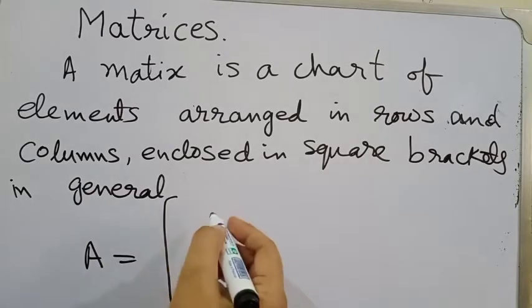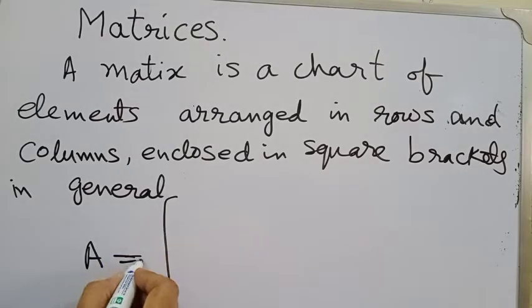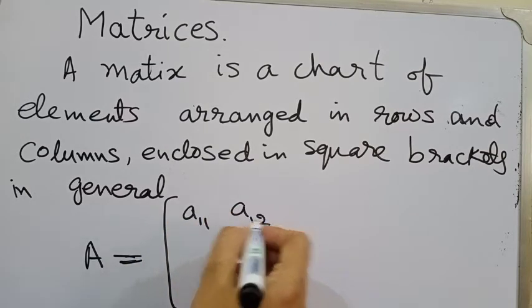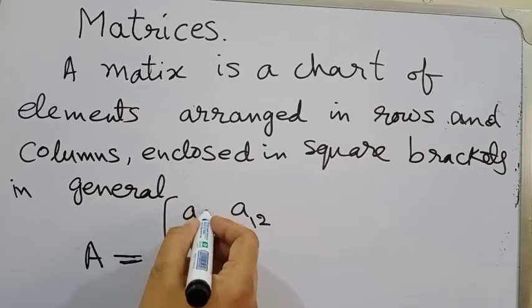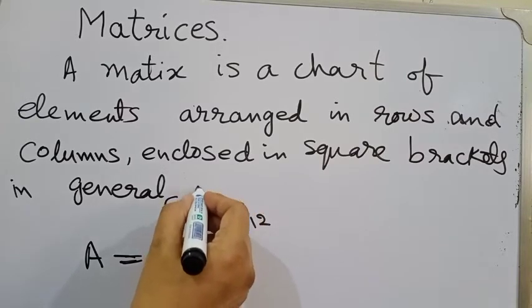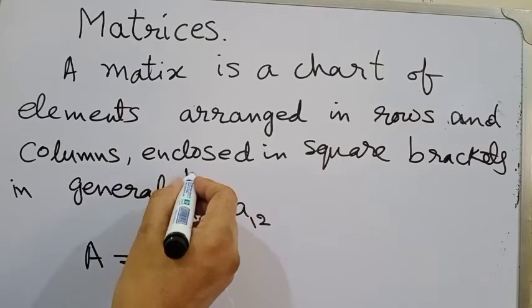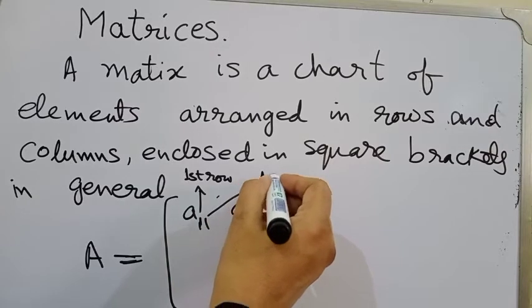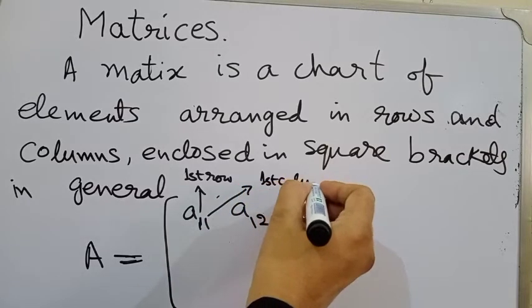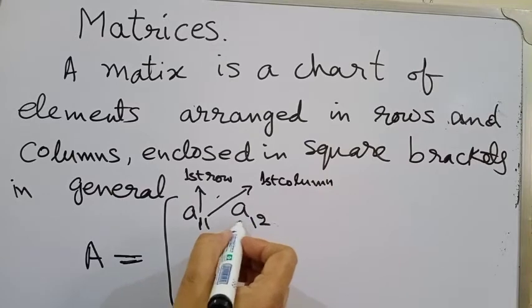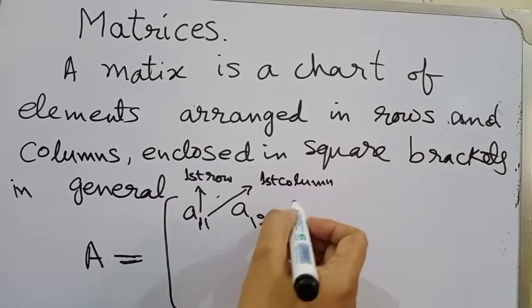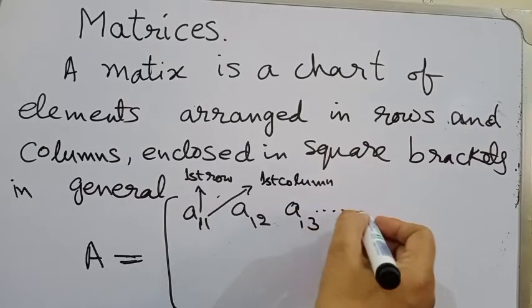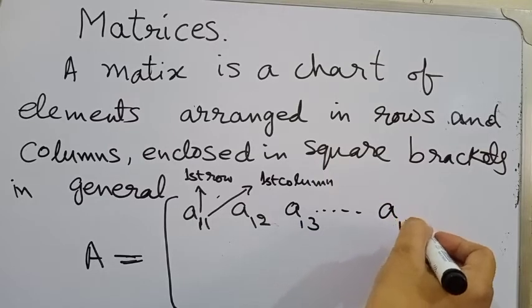We write capital A matrix elements as A11, A12. A11 means first row and first column. This is first row and this is first column. A12 means first row and second column. A13, first row, third column and so on. A1N.